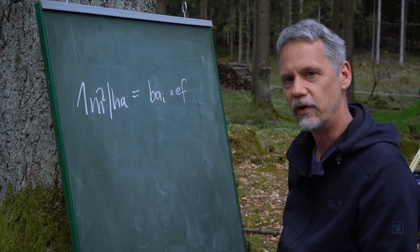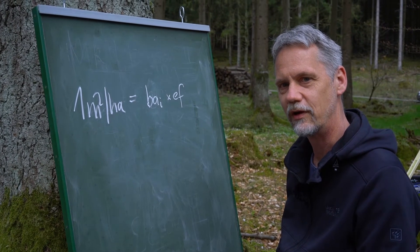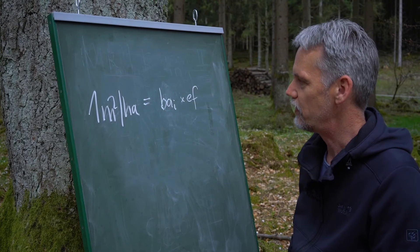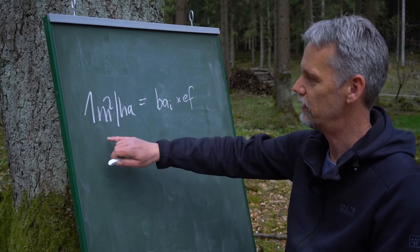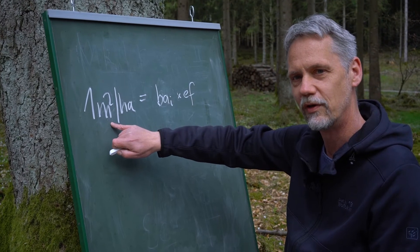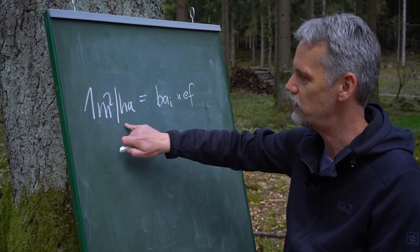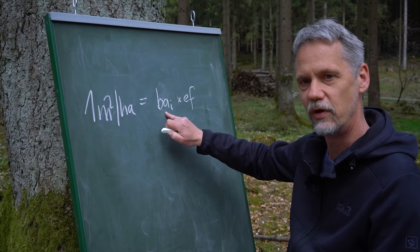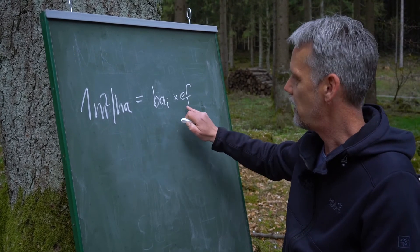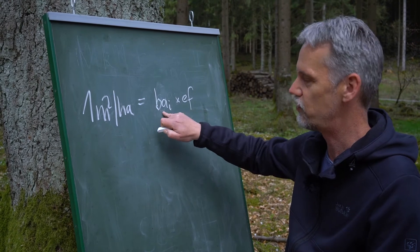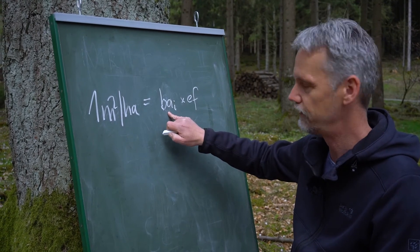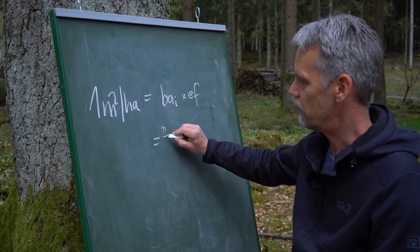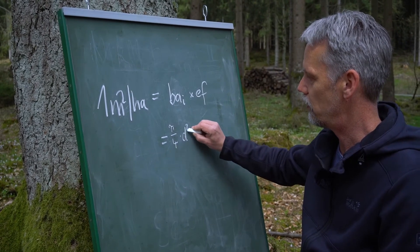Now I gave you some of the fixed relations you should keep in mind to check the critical distance, but maybe you are also interested in where they come from. Imagine a very simple calculation. If we do Bitterlich sampling with counting factor 1 — meaning every counted tree represents one square meter per hectare in basal area — then this is a result of the basal area of the tree we are looking at and an expansion factor that expands this basal area to one hectare. We can rewrite this as follows.